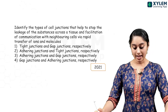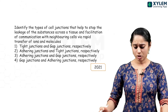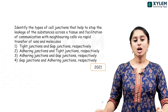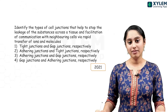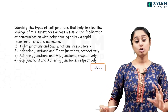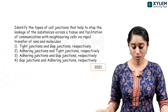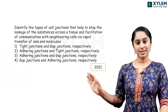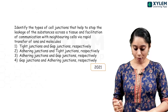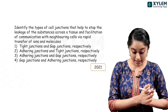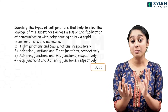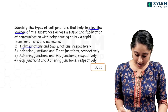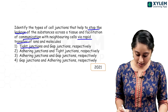Identify the types of cell junctions that help to stop leakage of substances across the epithelial tissue and facilitate communication with neighbouring cells via rapid transfer of ions and molecules. To stop leakage, we need tight junctions. For communication via rapid transfer of ions between cells, that is a gap junction. So tight junction stops leakage and gap junction helps in communication.